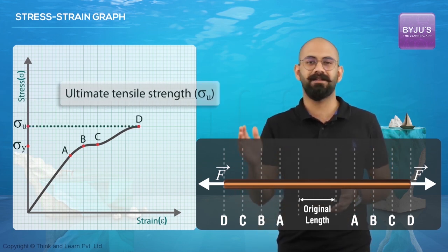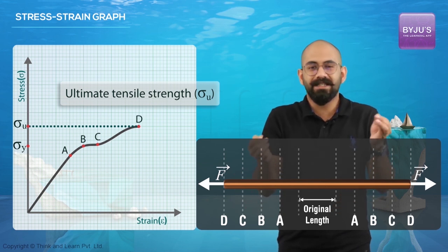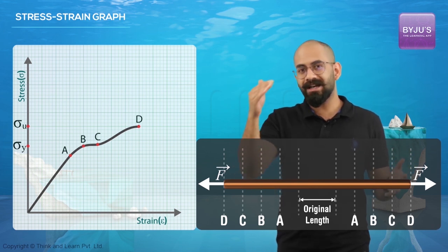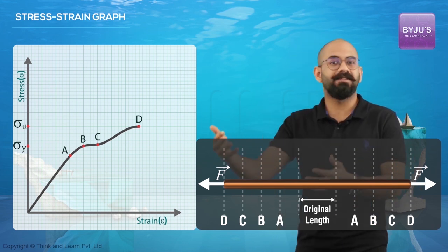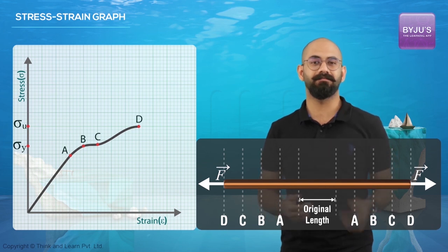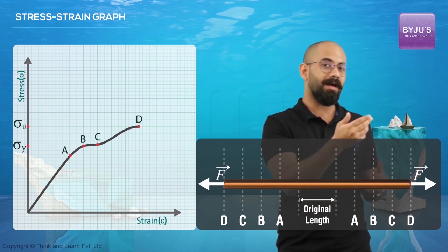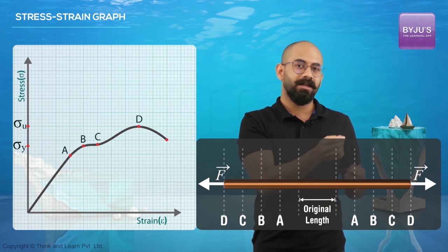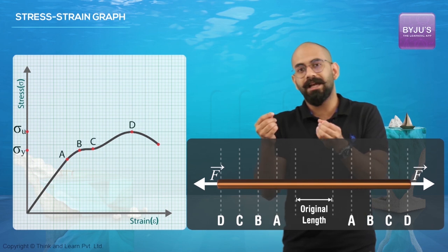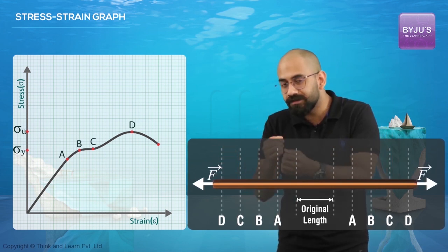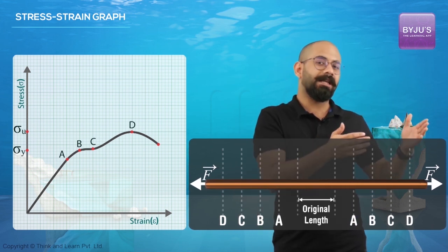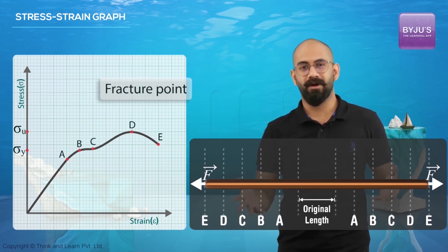The slope increases until it reaches point D, which is the maximum stress possible — called the ultimate tensile strength. At this point the wire is almost going to fracture. Beyond D, you don't even have to increase the stress further to increase the strain; even if you reduce the stress, the elongation will still increase. Finally, we reach point E, which is called the fracture point, where the wire gives way and breaks.